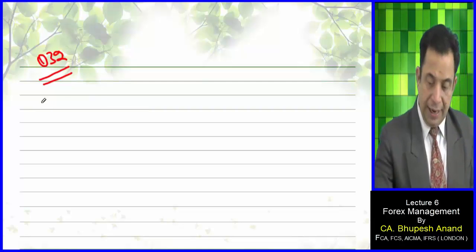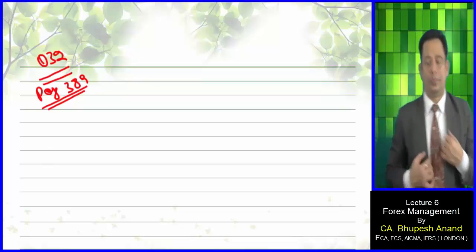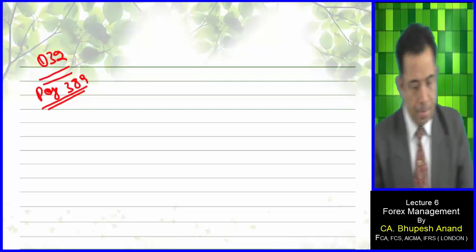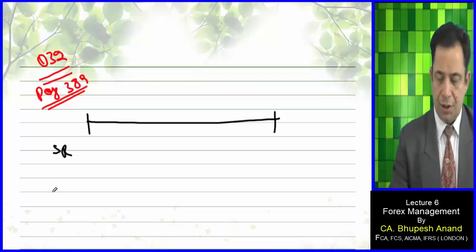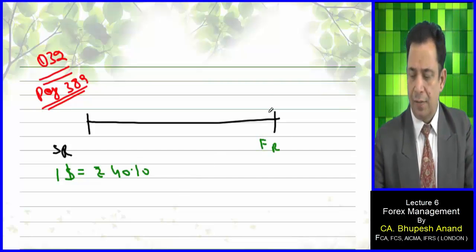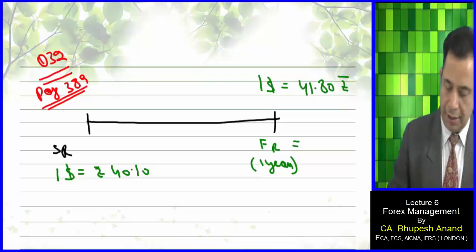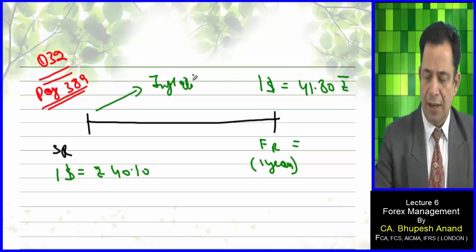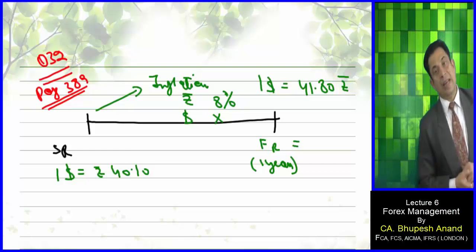Page number 389, question number 32. The present exchange rate — today's spot rate — is one dollar equal to 40 rupees, and the one-year forward rate is one dollar equal to 41.80 rupees. The inflation rate of the dollar is not given; we need to find it.